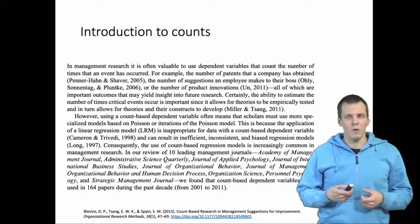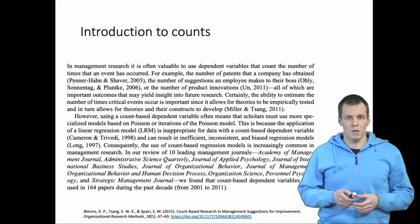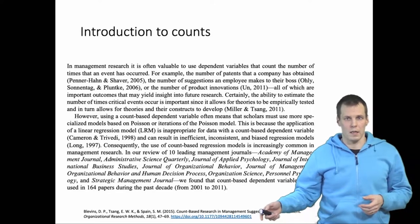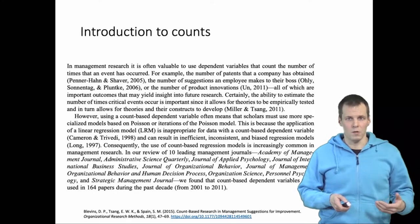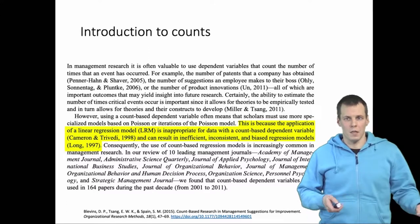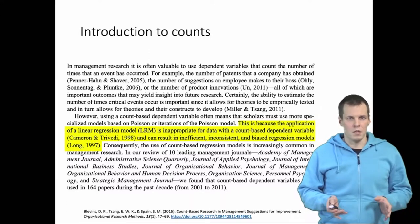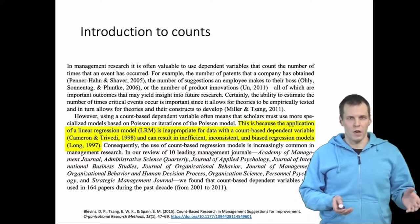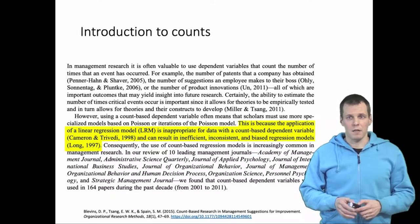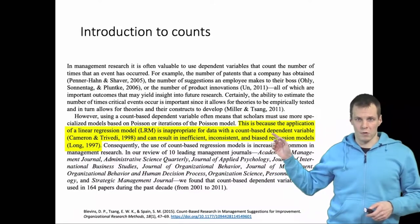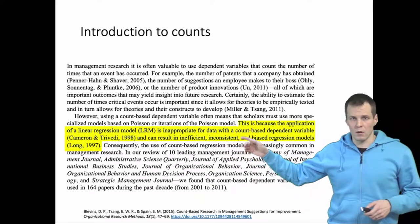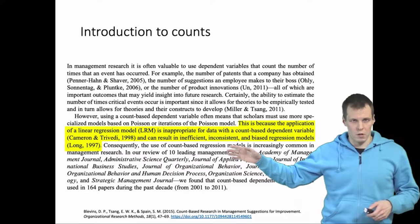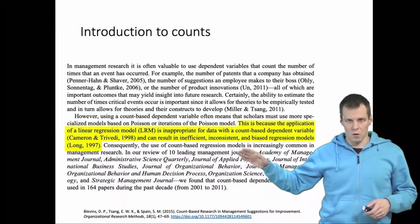There is some confusion around how you model count variables in the literature, and this article in organizational research methods is one such example. It is very commonly believed that if you have a count variable, you have to use some other model than normal regression analysis, such as Poisson regression or negative binomial regression.